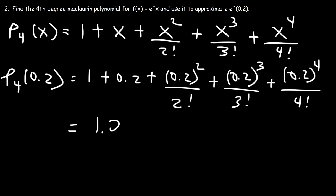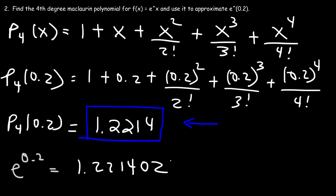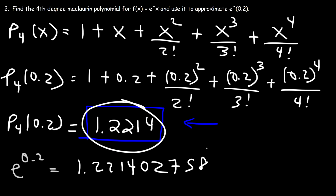Computing that gives approximately 1.2214. The exact value of e^0.2 is 1.221402758, so this is a very good estimation. You can use the Taylor polynomial and Maclaurin polynomial to represent real functions and approximate function values when the input is close to the center — in this case, 0.2 is close to 0, which is where this function is centered.